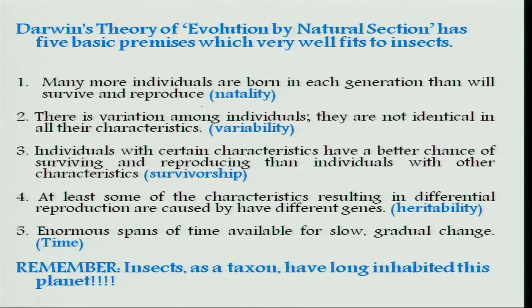What are the reasons for such tremendous success, especially for the insects? Darwin's theory of evolution through natural selection, which has five premises, fits very well into insects as a successful group. Insects have got a very high natality rate, indicating that their birth rate is higher than the death rate, so many more individuals are born in each generation than actually survive and reproduce.